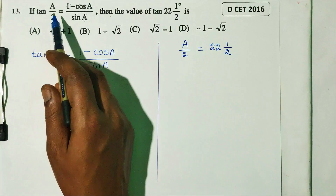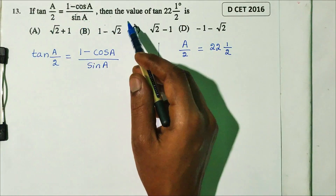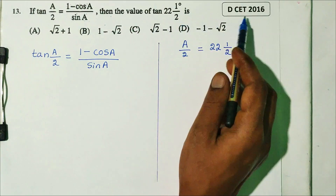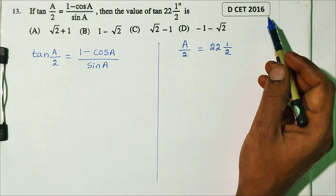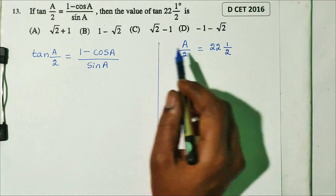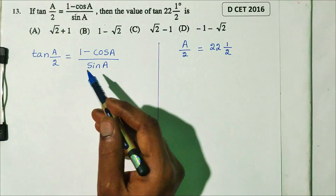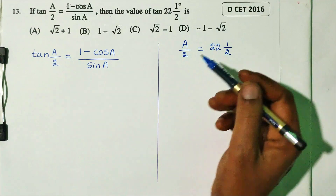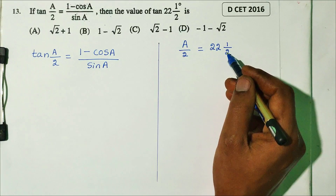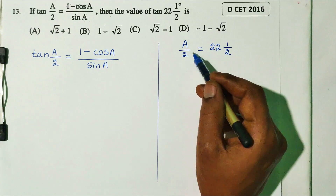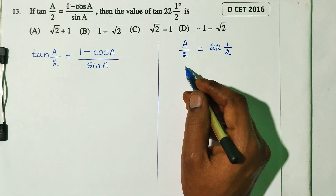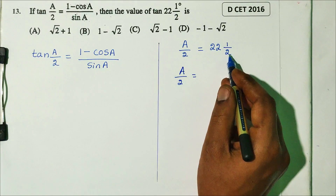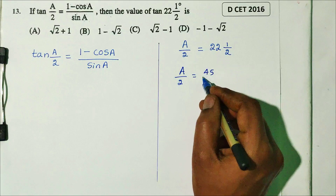Question number 13. If tan(a/2) equals (1 minus cos a) divided by sin a, then the value of tan(22½°) is — DCT 2016 question. Here a/2 equals 22½°, so a equals 45°.